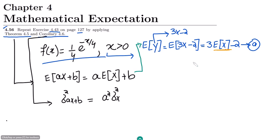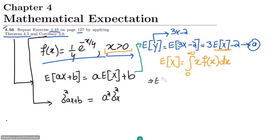To find the expected value of X, we compute the integral of x·f(x) dx with limits from 0 to infinity. Substituting the value of f(x), this becomes the integral from 0 to infinity of x times (1/4)·e^(−x/4) dx.